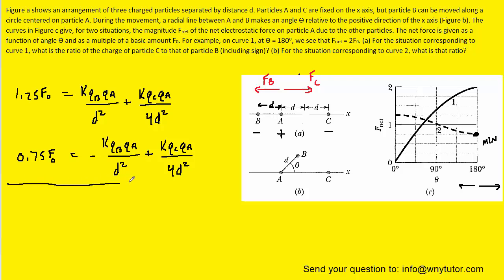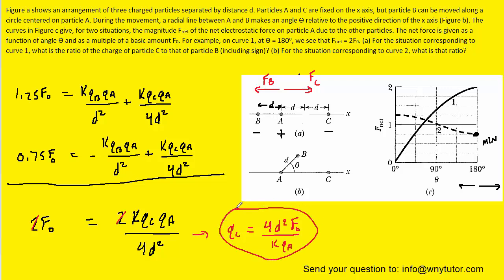What we'll do is add these two equations together. When we add the left side, we're going to end up with 2F0. Notice that this term and this term cancel out because one's positive and the other's negative, and we're going to have two of those terms since we're adding them together. Now we're going to solve this equation for QC, so we can cancel 2 on both sides, multiply both sides by 4D squared, and divide by KQA. This is a result that we're going to hold on to.